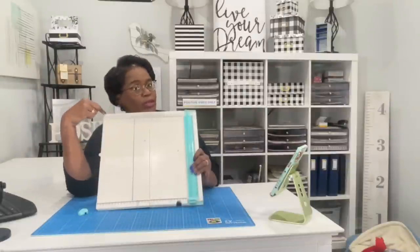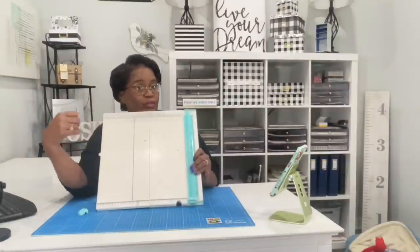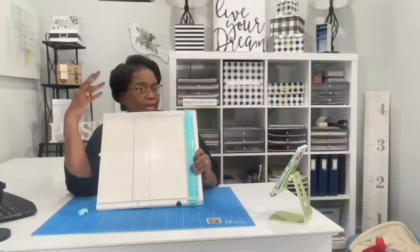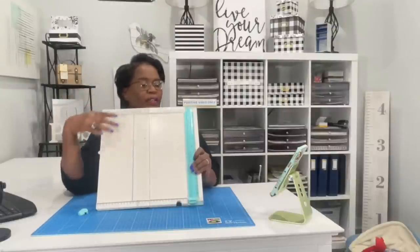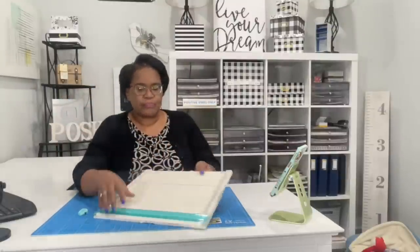Now this is one of the paper trimmers that you see me use on camera a lot. And I do use it a lot. It's really worn, but it gets the job done. The one thing about this is depending on how often you use it, you can go through the blades very, very quickly. And sometimes when we take out the old blade and replace it with the new, we throw it away.